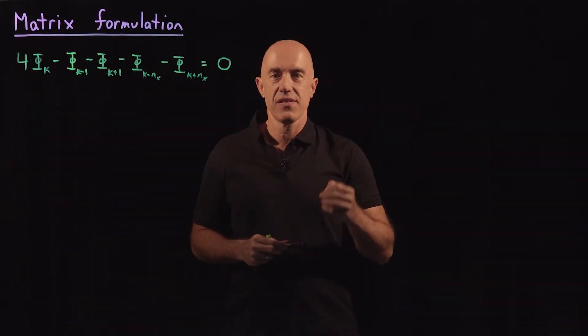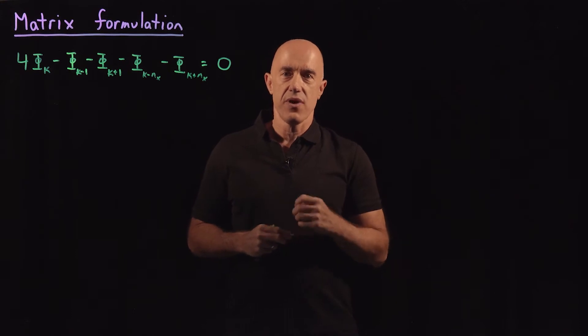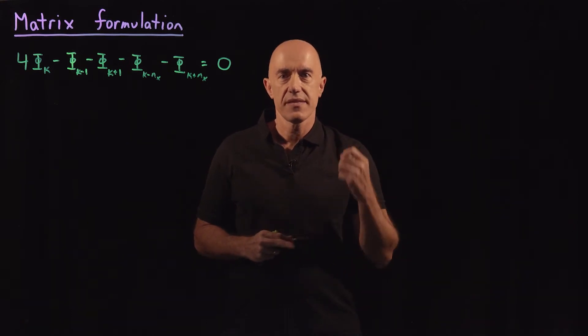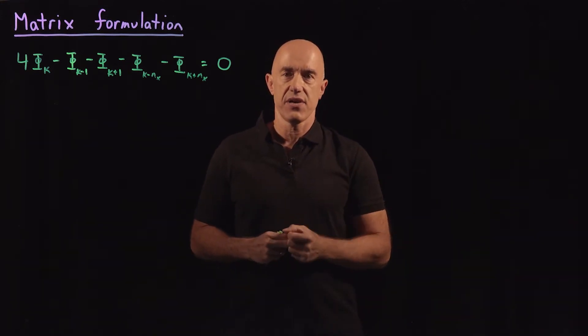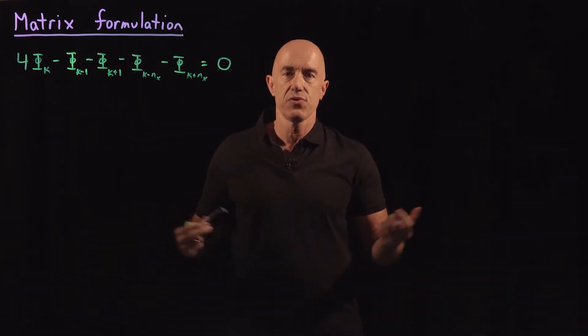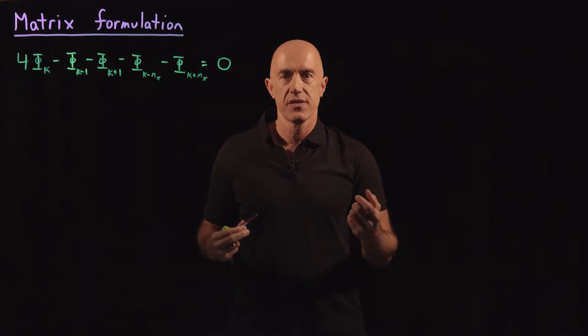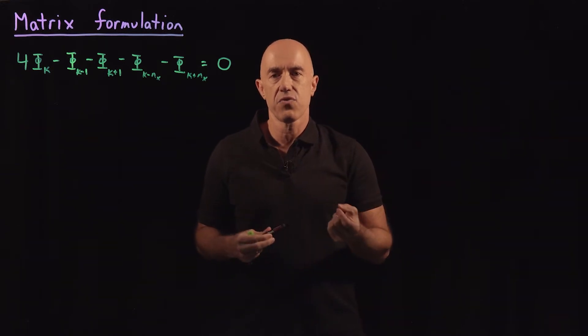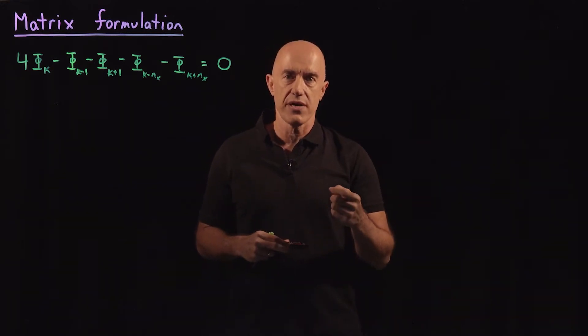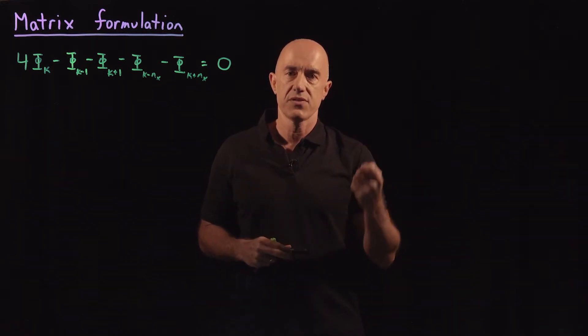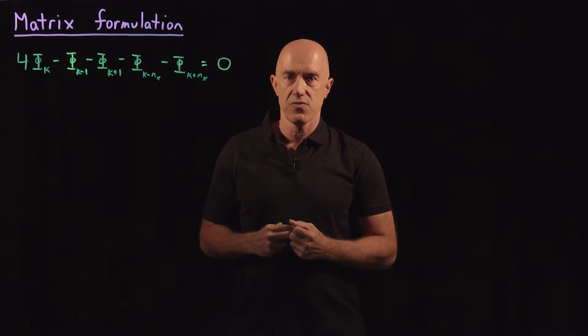We're solving the Laplace equation, del squared phi equals 0, in two dimensions. So del squared is d squared dx squared plus d squared dy squared.